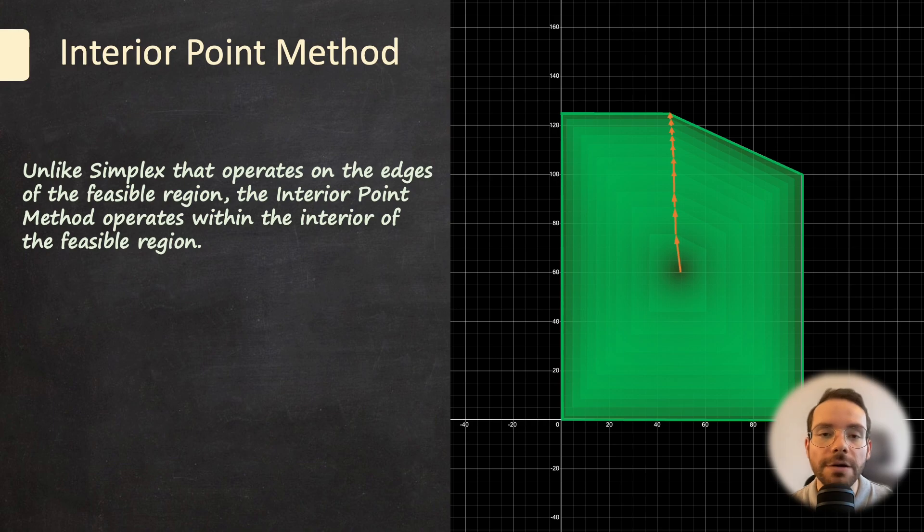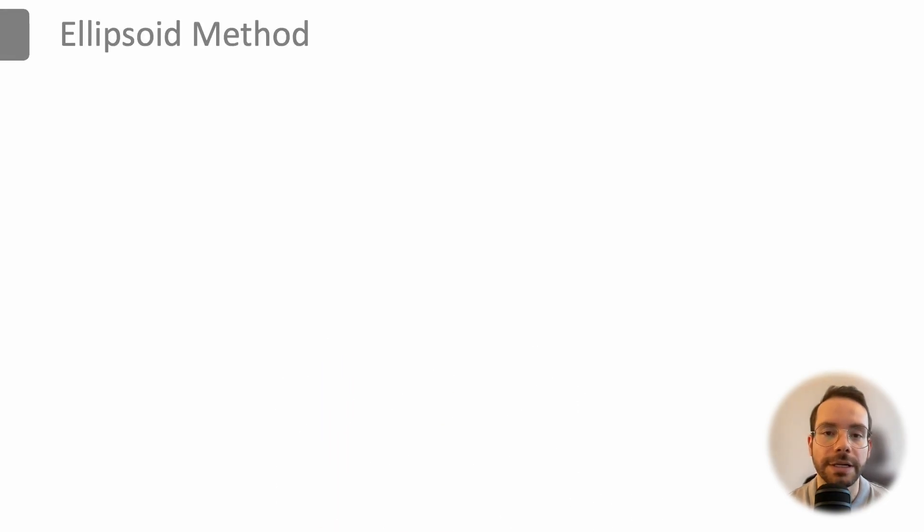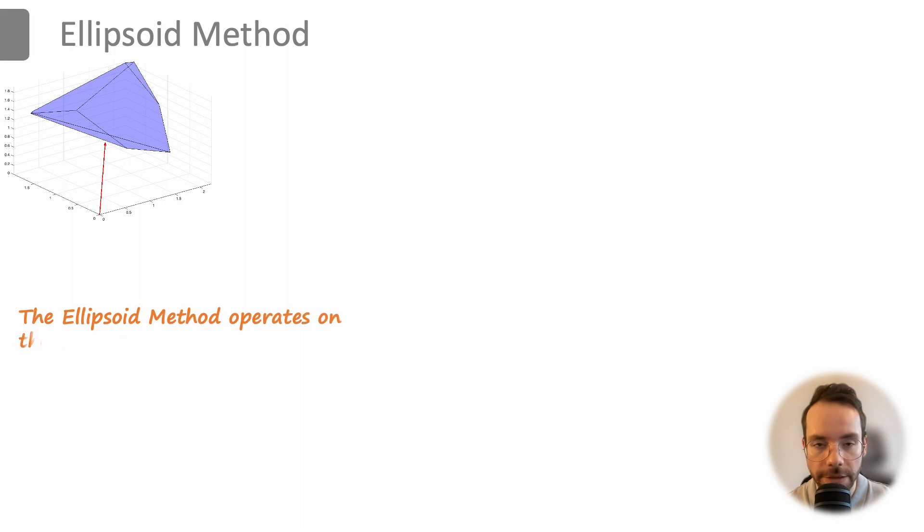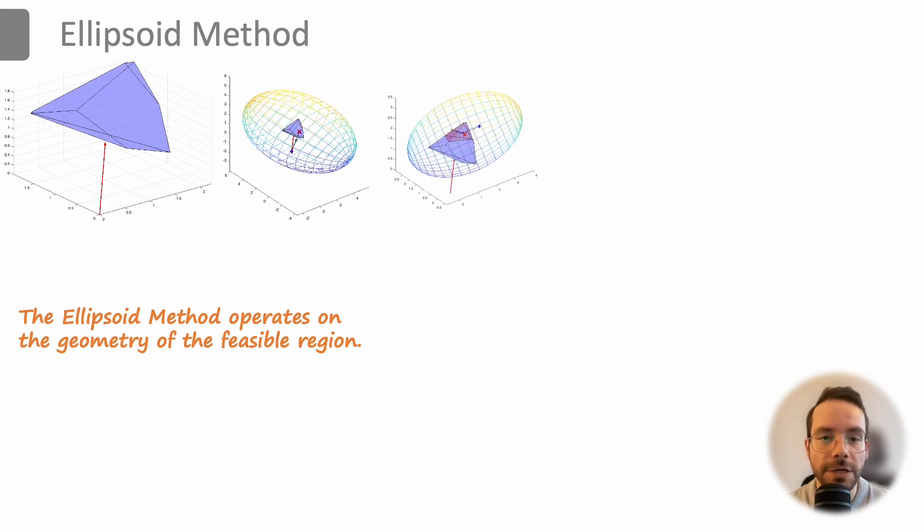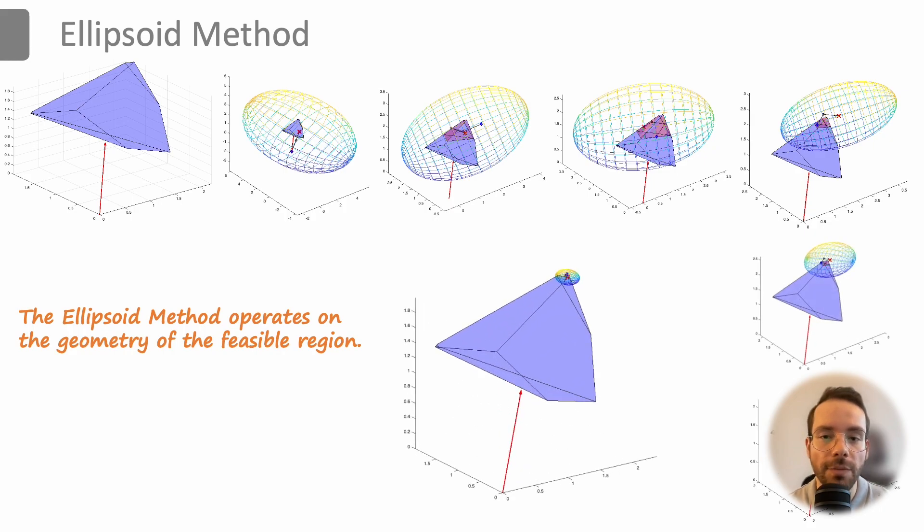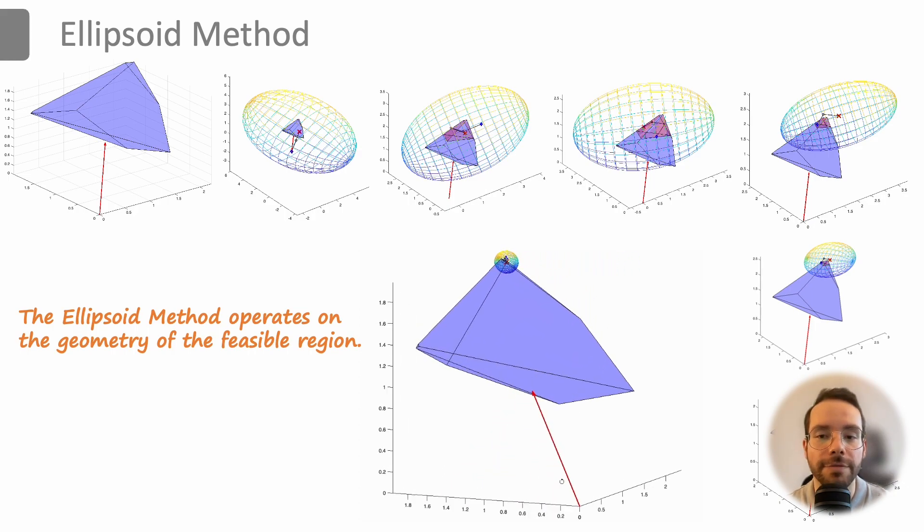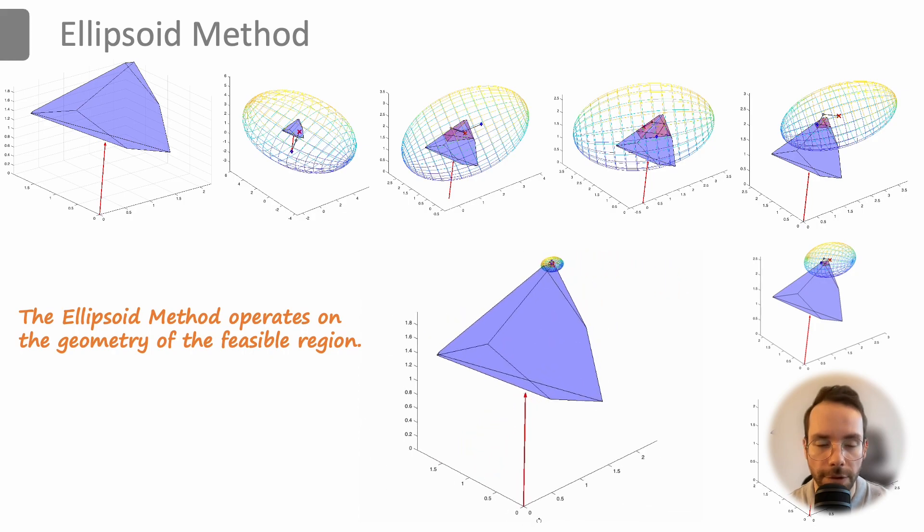The other important alternative method is the ellipsoid method that operates on the geometry of the feasible region. It uses ellipsoids to iteratively shrink around the feasible region until an optimum solution is found. So the algorithm starts with an ellipsoid containing the feasible region. At each iteration, the ellipsoid is updated to a smaller one that still contains the feasible region. The process continues until the ellipsoid becomes small enough to approximate the optimal solution with a reasonable precision.